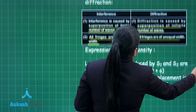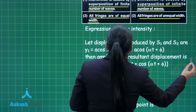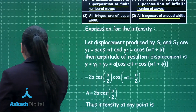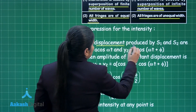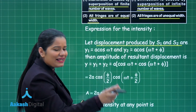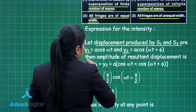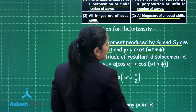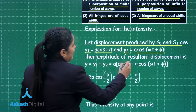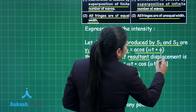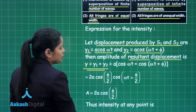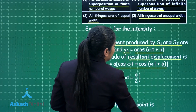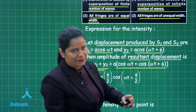This part also demands us to derive an expression for the intensity in Young's double slit experiment. Let us suppose the displacement produced by both slits S1 and S2 is Y1 and Y2. Y1 is equal to A cos(ωt), while Y2 is equal to A cos(ωt + φ). The resultant displacement will be given by the superposition of these two waves, equal to A[cos(ωt) + cos(ωt + φ)].